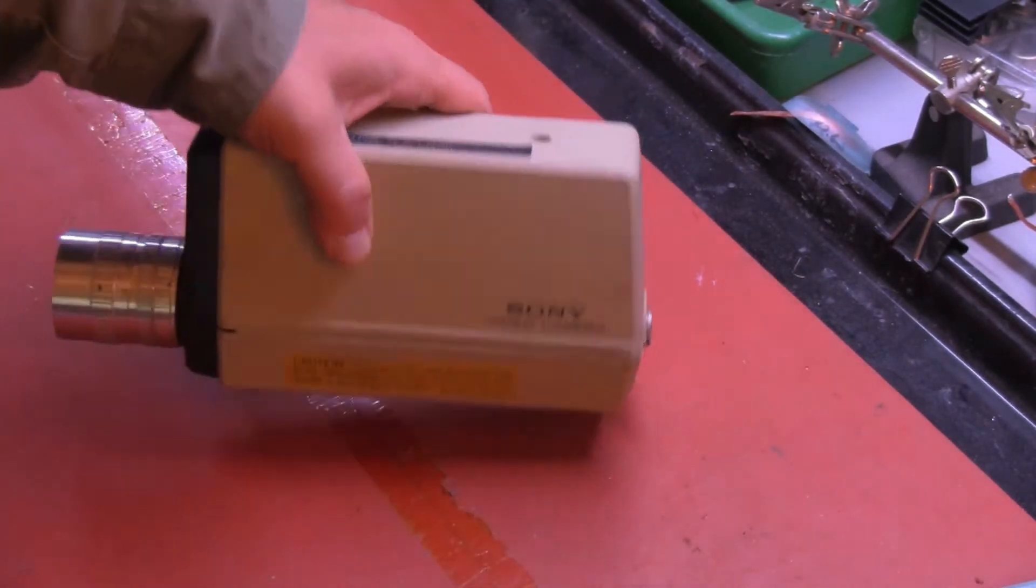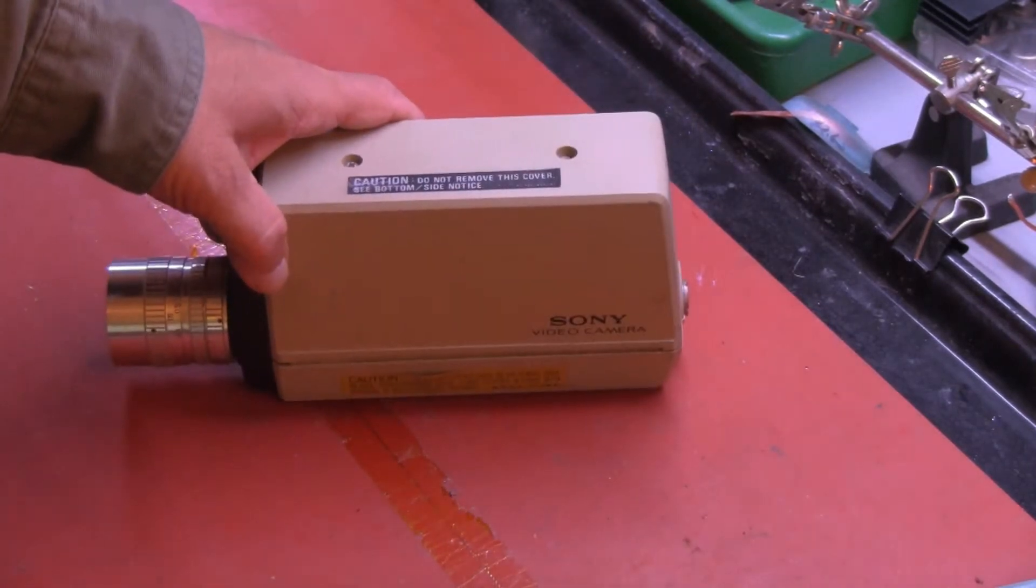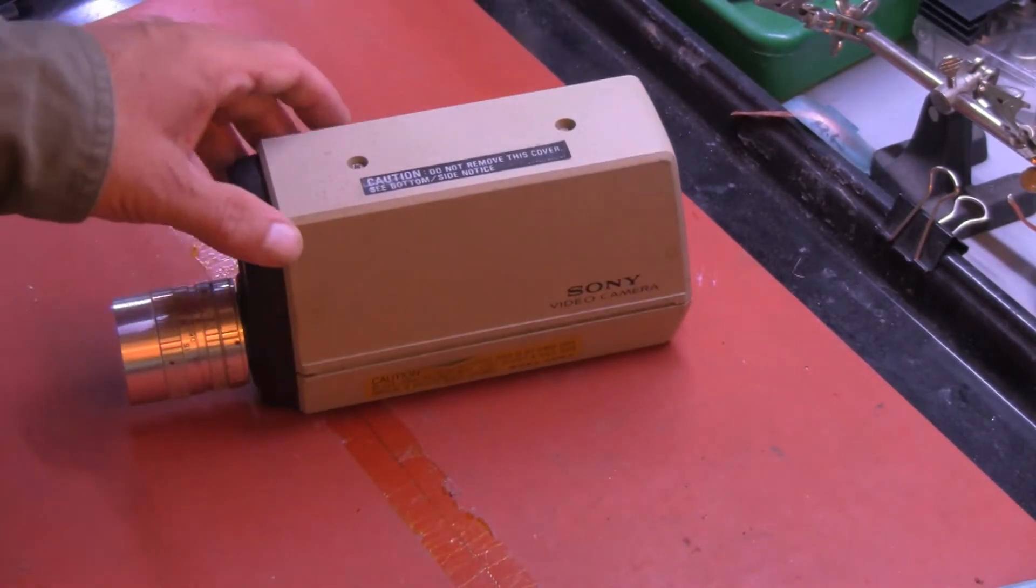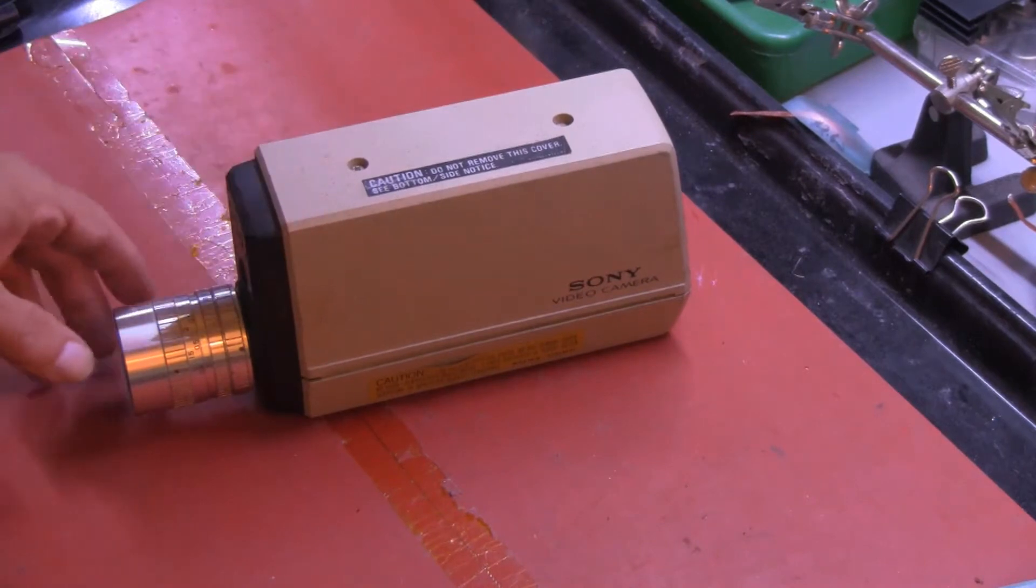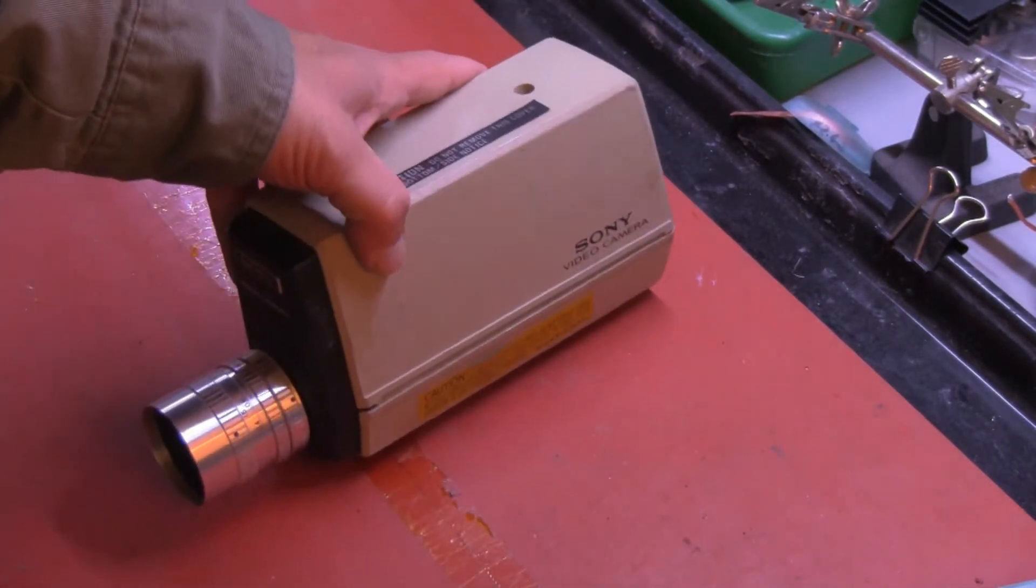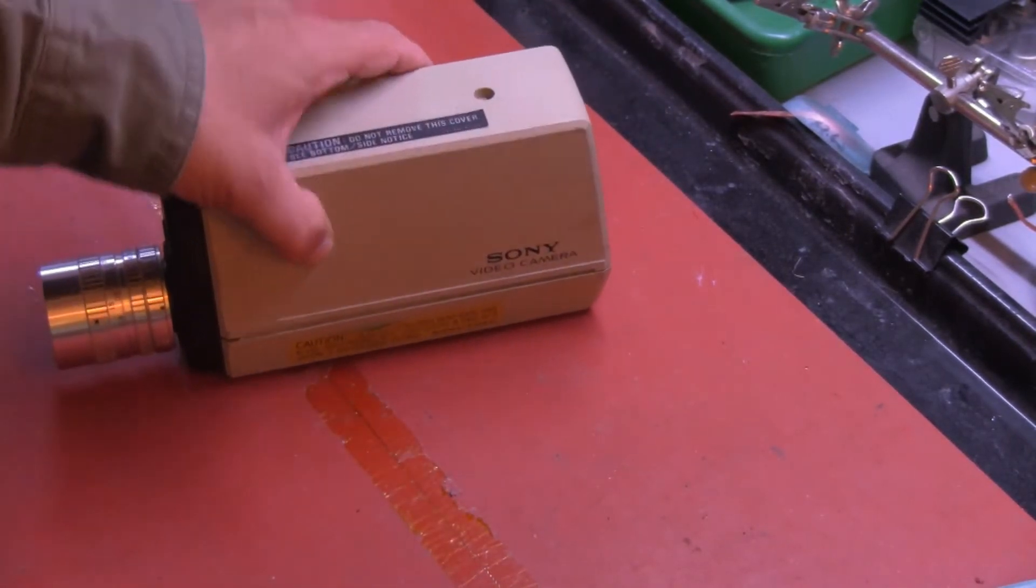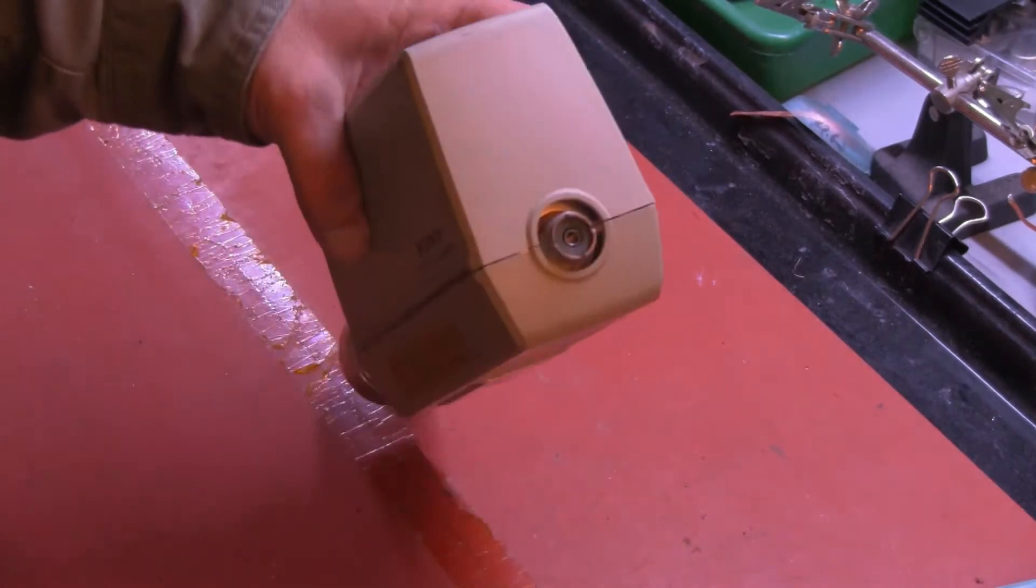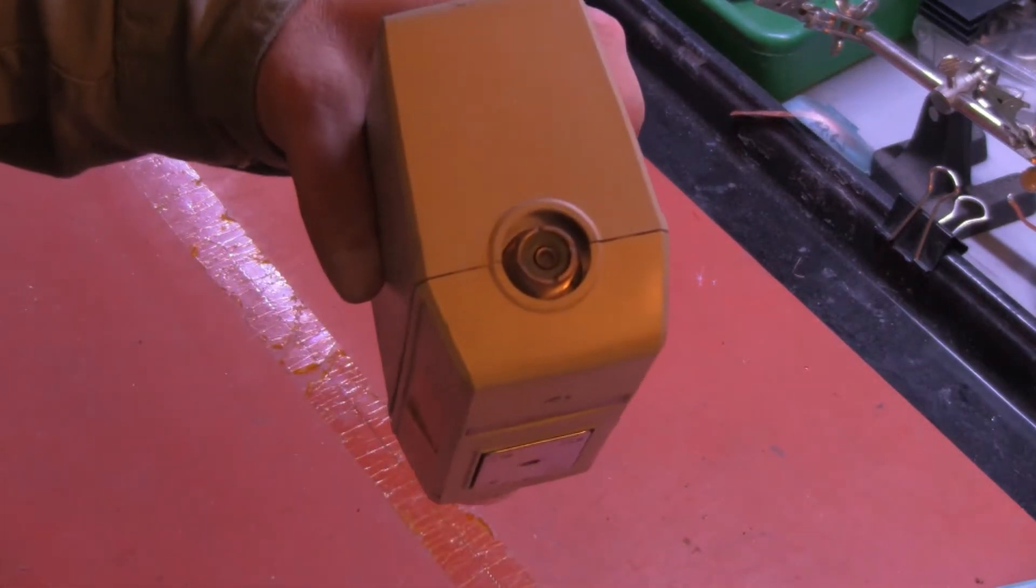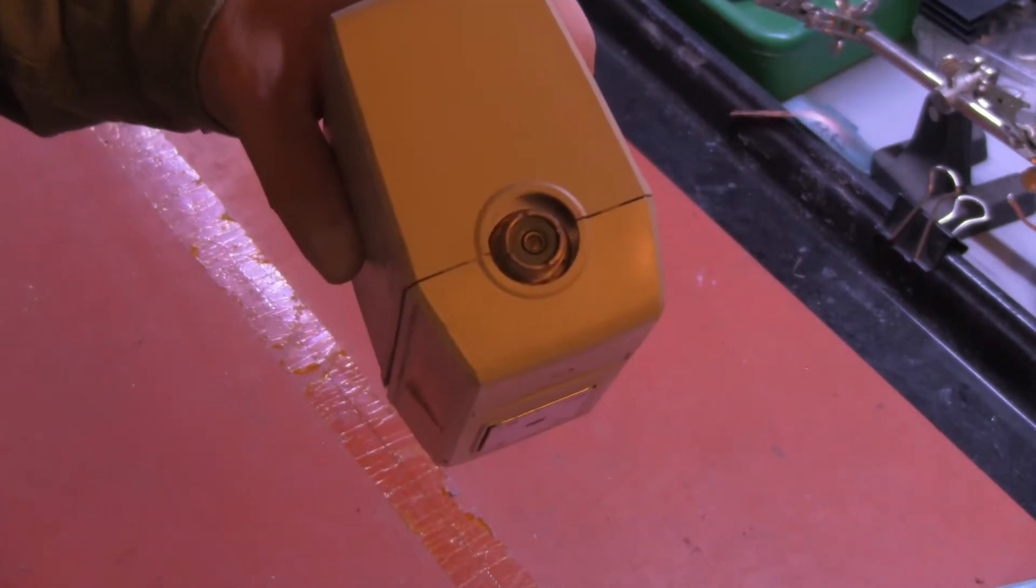The AVC-1400 is a small camera that Sony made to use with low-end video tape recorders in the 70s. And it came in a little kit with a microphone and a bag and a power supply that powered the camera head through the coax cable.